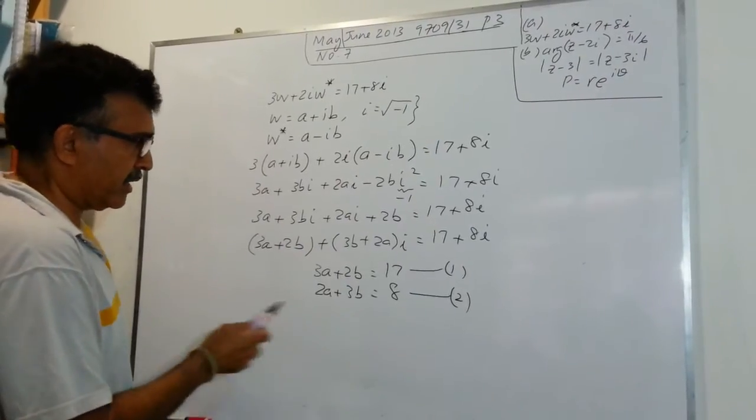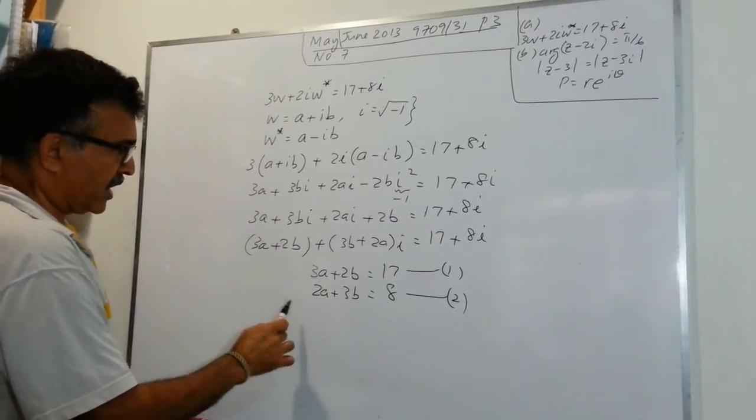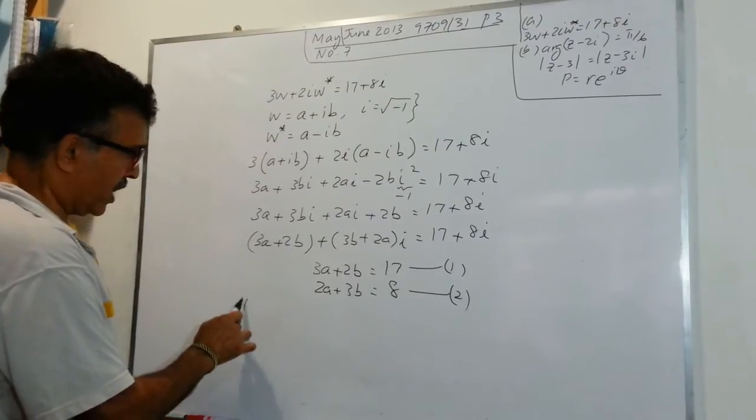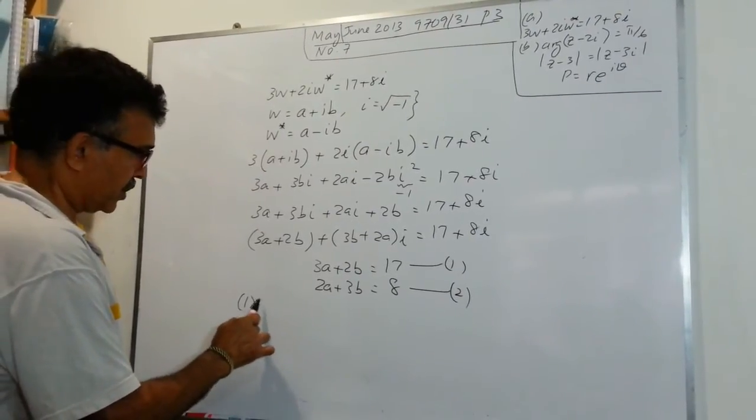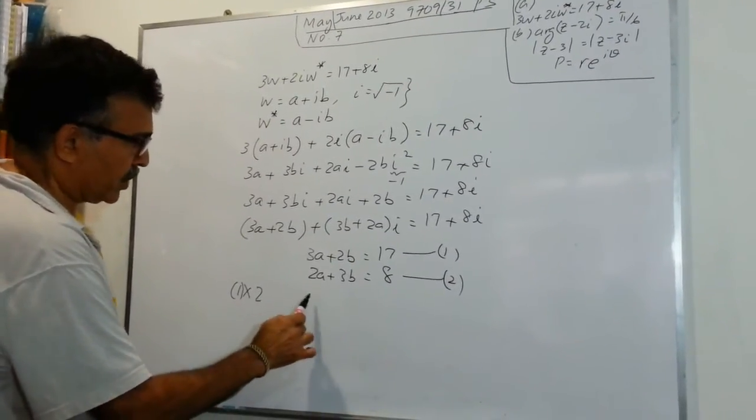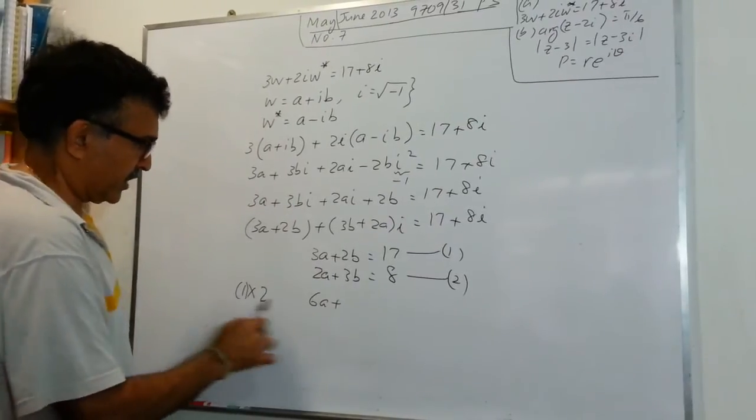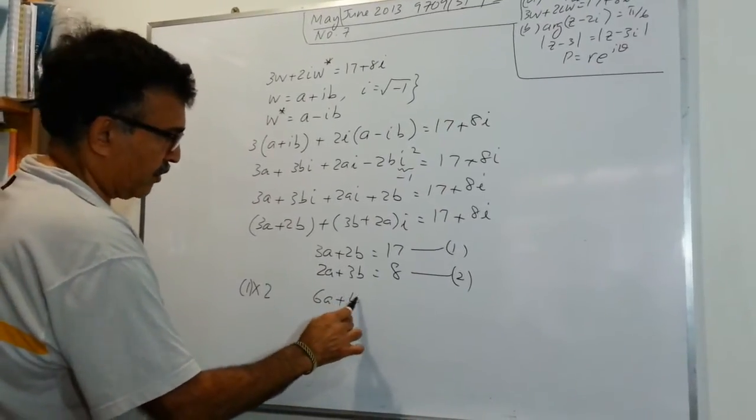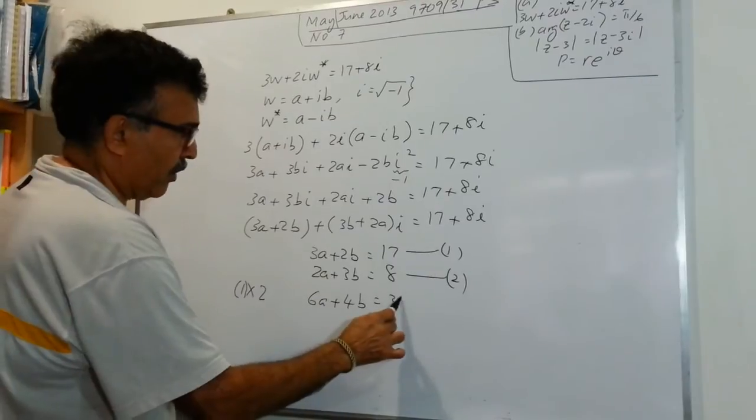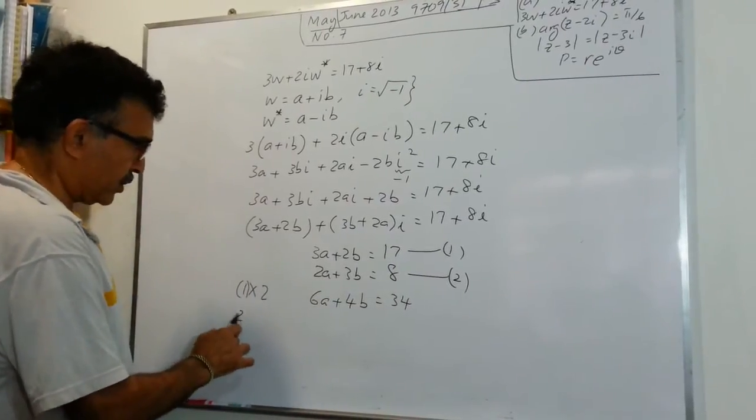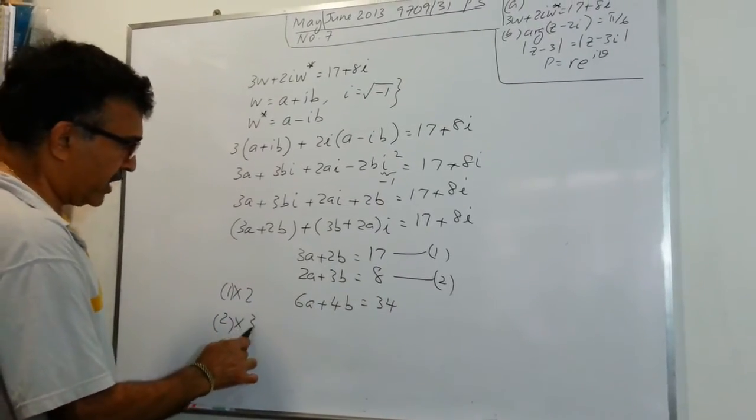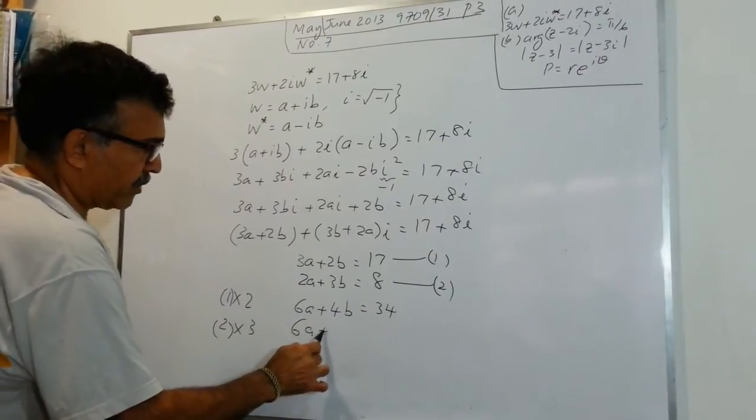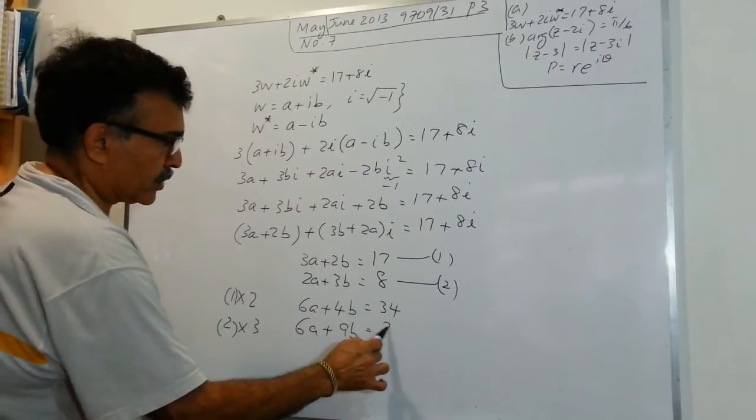So let's go ahead and take equation 1 times 2. You will get 6A plus 4B equals 34. And equation 2 times 3, you will get 6A plus 9B equals 24.